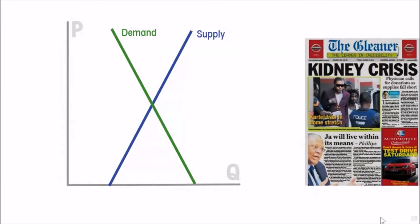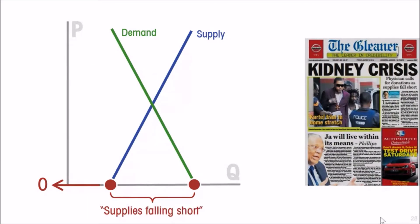So the price is zero. At a price of zero, there are many who are demanding kidneys and very few who are willing to supply them. That excess demand is what the physician was referring to in the news item about supplies falling short. This merely illustrates how we can represent that situation in the market model.